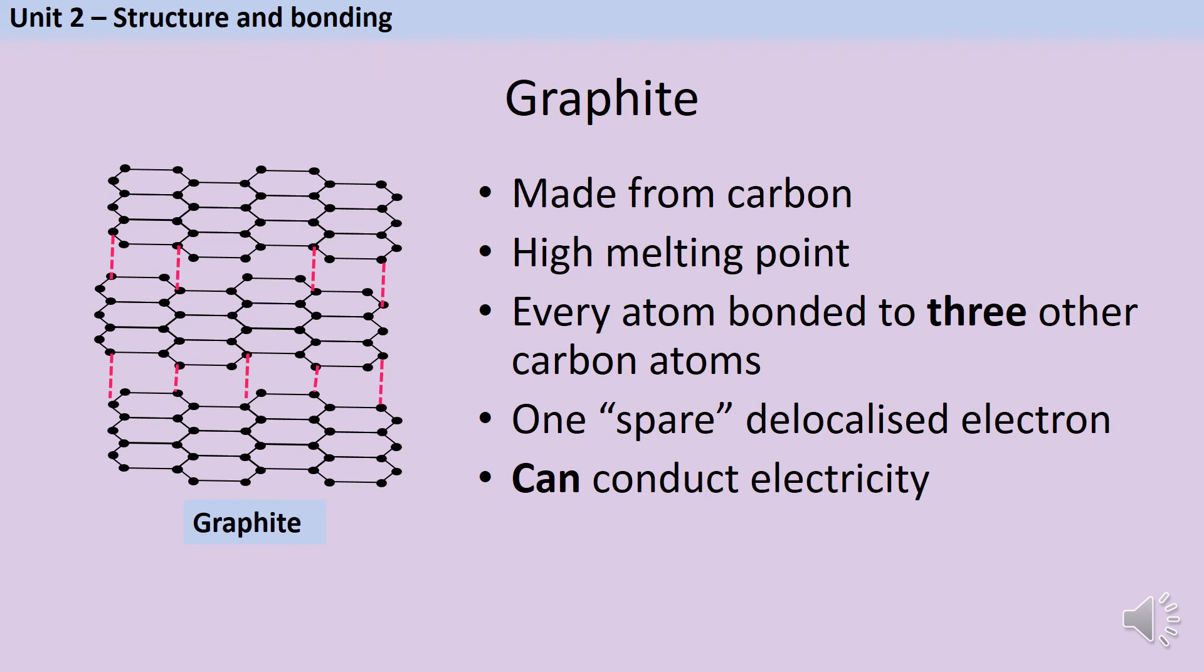The other important thing about the structure of graphite is that the atoms form layers. We have sheets of hexagons and in between those layers there aren't any strong covalent bonds, there's just this weak intermolecular force and that means it's very easy for the layers to slide over each other and this makes graphite soft and slippery.